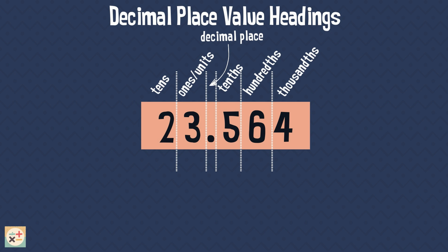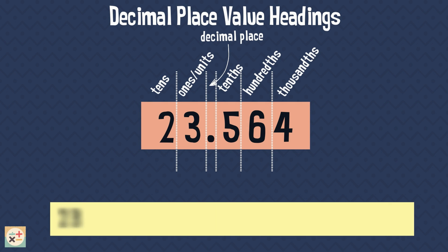We can see that the number 23.564 can be broken down into the whole numbers 20 and 3. The decimal digits of the number are 0.5, 0.06, and 0.004.